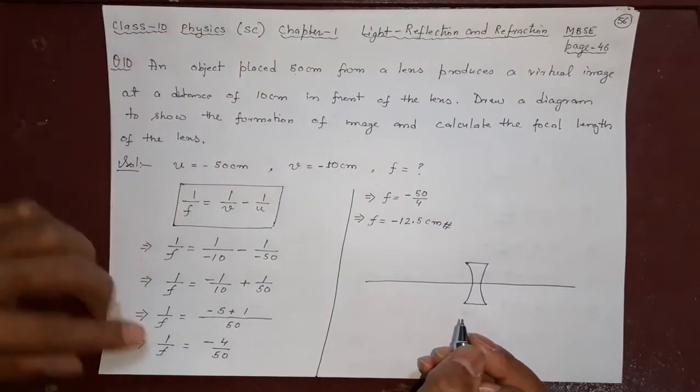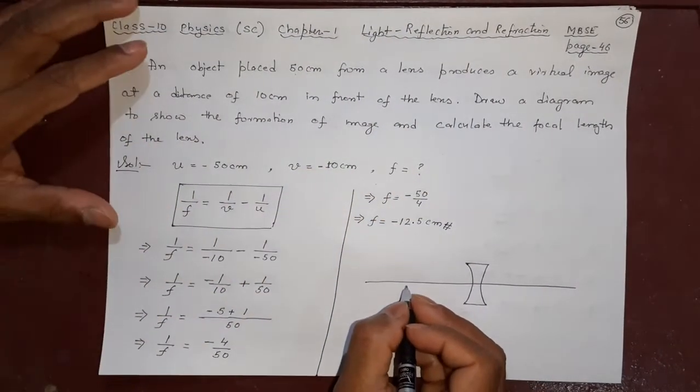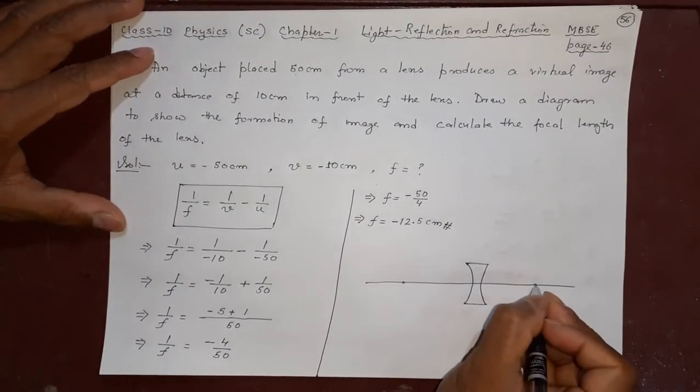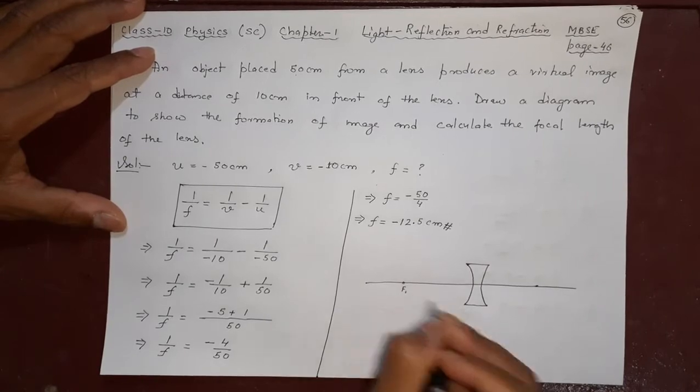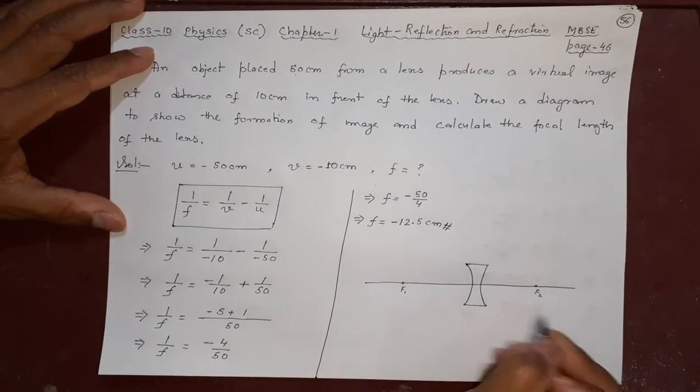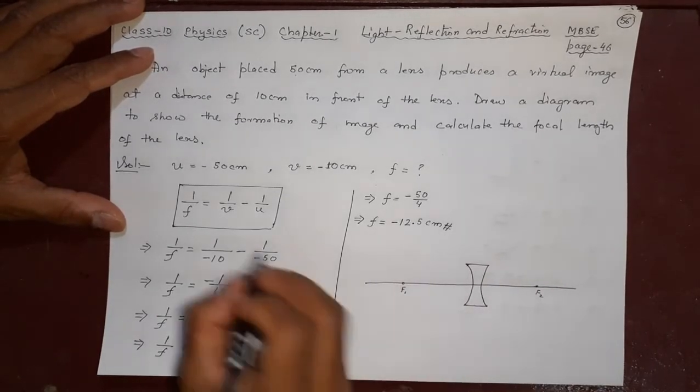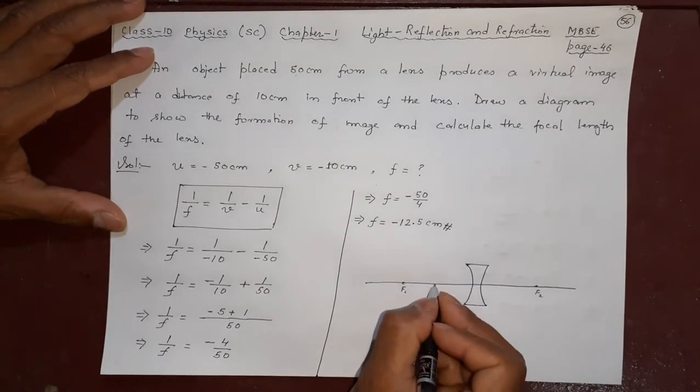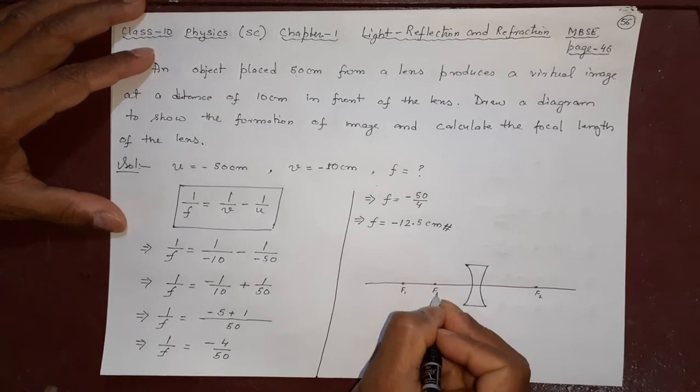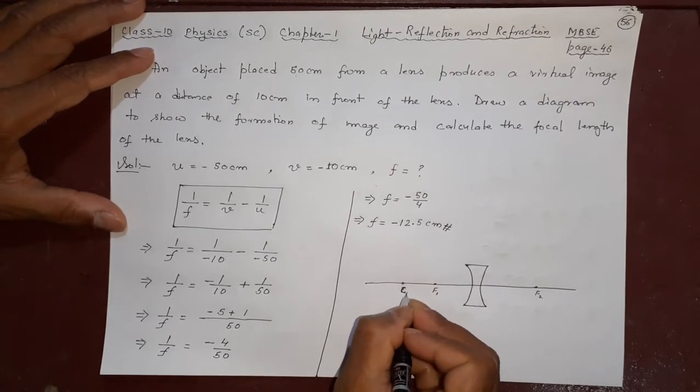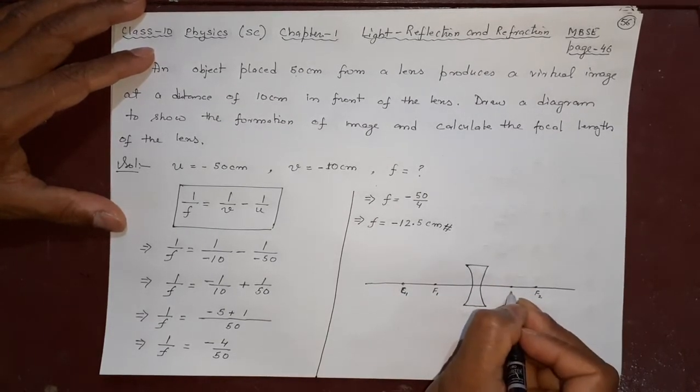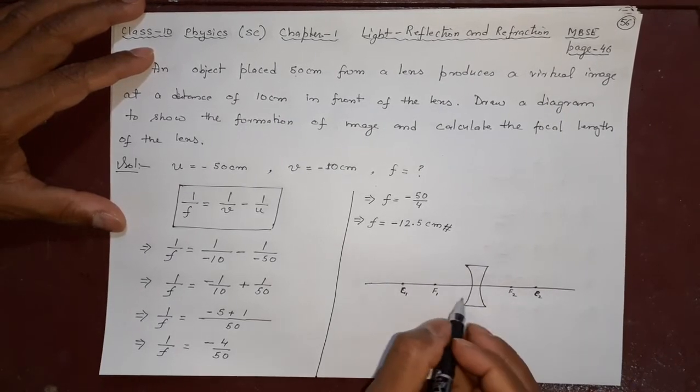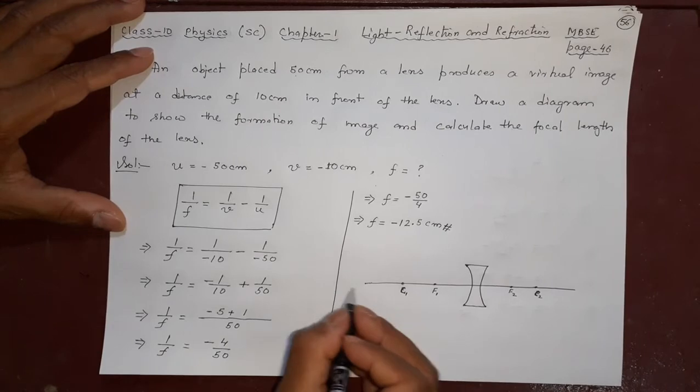What is the focal length? 12.5, somewhere here you can call 12.5. F1, F2 you can write, you may not write both also. And u is 50, u is 50 means the focal length has to be very small here. I will write F1, this is C1, this is F2, this is C2, because it has to be 5 times. Somewhere here will be the object.